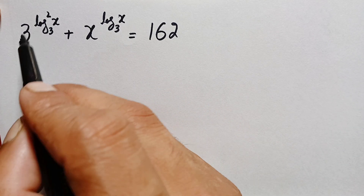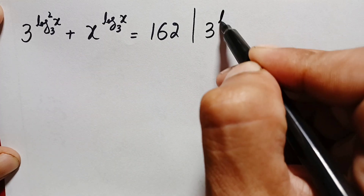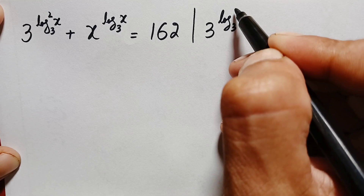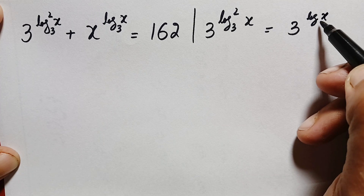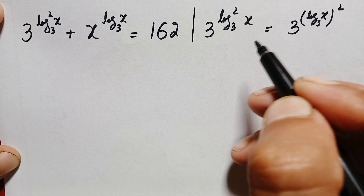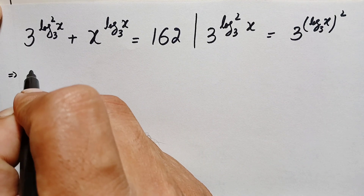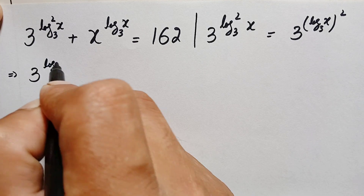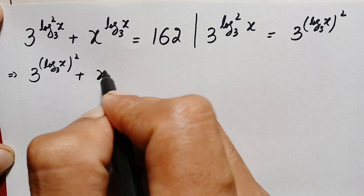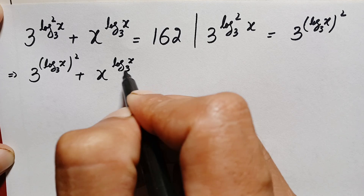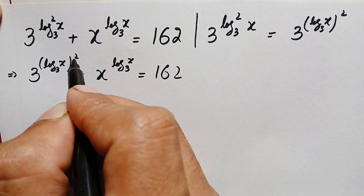Let's start our solution. First, we can rewrite the first term: 3 raised to power log base 3 squared of x can be written as 3 raised to the power log of x with base 3, whole square. Using this, the left hand side becomes 3 raised to power (log₃x)² plus x raised to the power log of x with base 3, equal to 162.